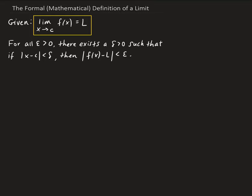In this lesson, I'm going to talk about the formal definition of a limit, sometimes referred to as the mathematical definition. Given that the limit of our function f of x as x approaches c is equal to l, the formal definition says that for every epsilon greater than 0, there exists a delta greater than 0 such that if the absolute value of x minus c is less than delta, then the absolute value of f of x minus l is less than epsilon.